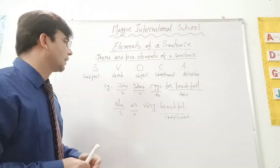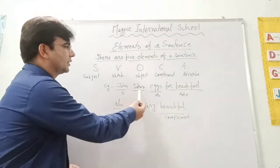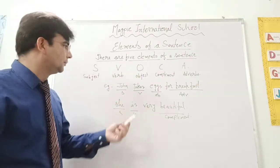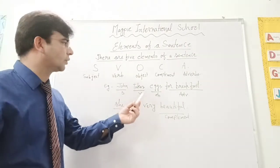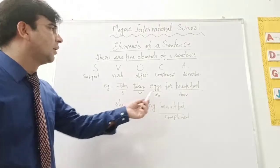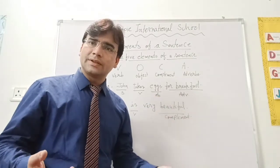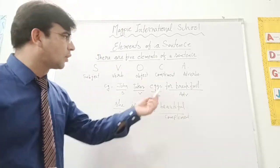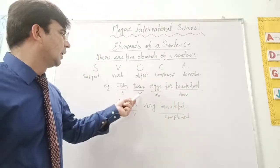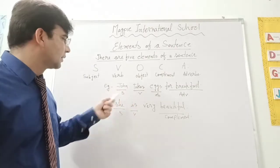Now, please look at the sentences. John takes eggs for breakfast. John के बारे में बात कर रहे हैं. Take, एक action बनता है. Eggs, उसको receive कौन कर रहा है, eggs. For breakfast, किस चीज के लिए लिए जाते हैं, कब लिए जाते हैं. So, यह adverb हुआ, object, action यानि के verb और यह subject.